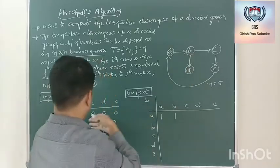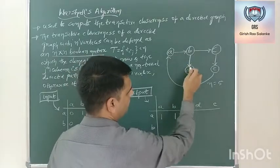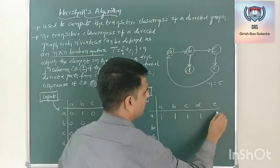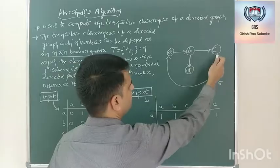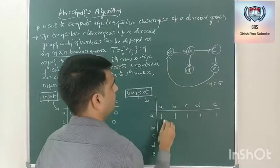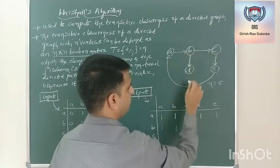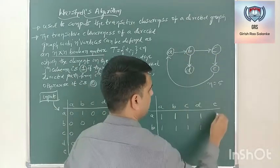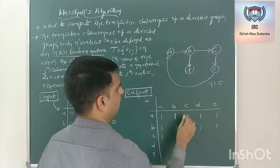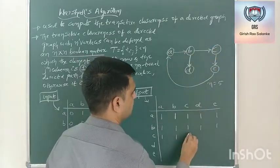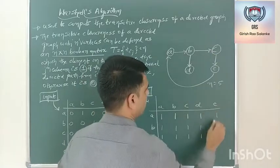A to B is reachable from the direct input itself. A to C is reachable. A to D is also reachable. A to E is also reachable. Similarly, from B, check whether from B I can reach A: B to C, C to E, E to A. B to B — same path. B to C is reachable. B to D is reachable. B to E is reachable. From C: C to A is reachable, C to B is reachable, C to C is also reachable, C to D is also reachable, C to E is reachable.